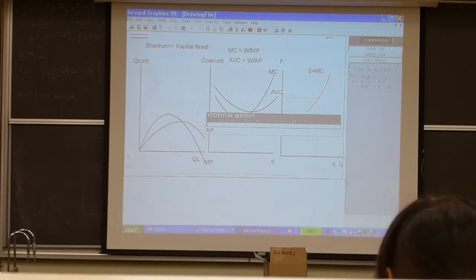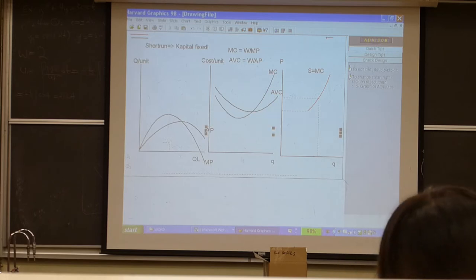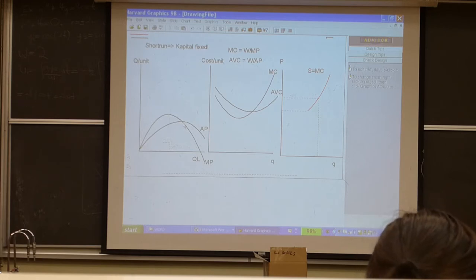Your understanding of marginal product defines everything. Marginal product defines average product because if the margin is rising and is above the average, the average rises. The average cuts the margin when the average is at maximum. So when I want to know maximum average product, it's where marginal product equals average product.